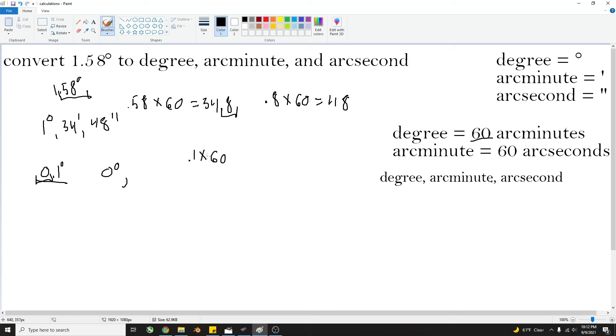0.1 times 60, and you will get 6, 6 arc minutes. And we'll have a remainder of 0. So we'll have 0 arc seconds.